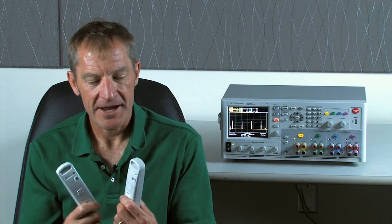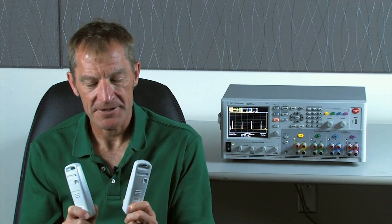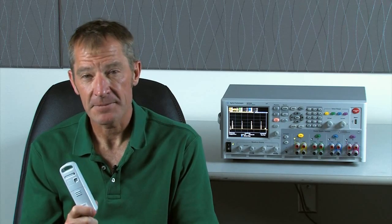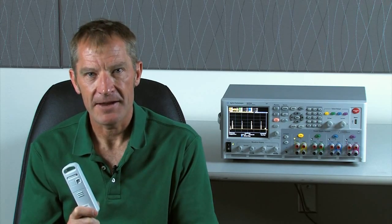Today I want to show you how the N6705B can be used to design products with longer battery run time. I have two nearly identical wireless temperature sensors. It turns out the newer design actually uses half as much current, doubling the battery life. So let's go ahead and make some measurements.